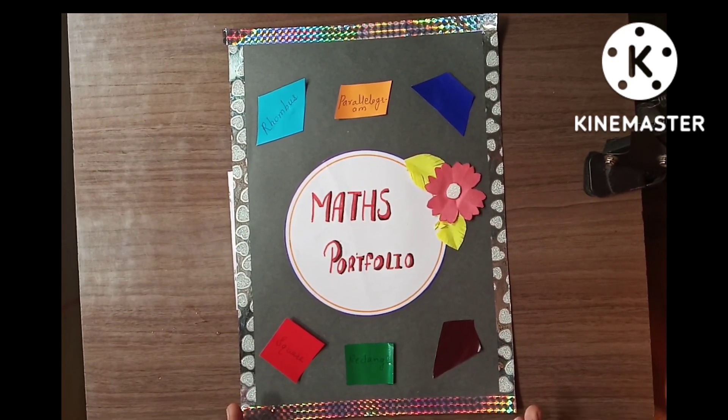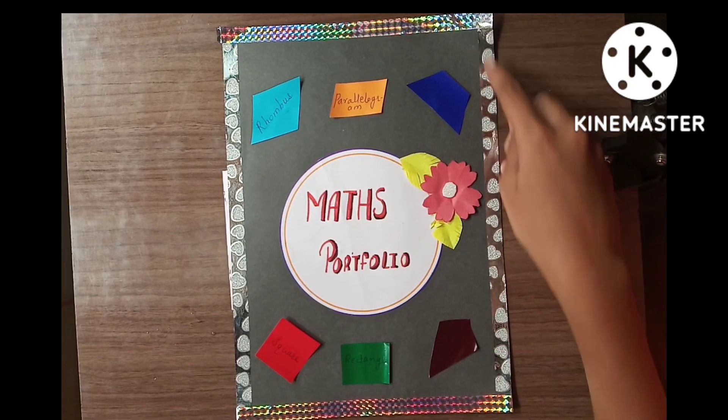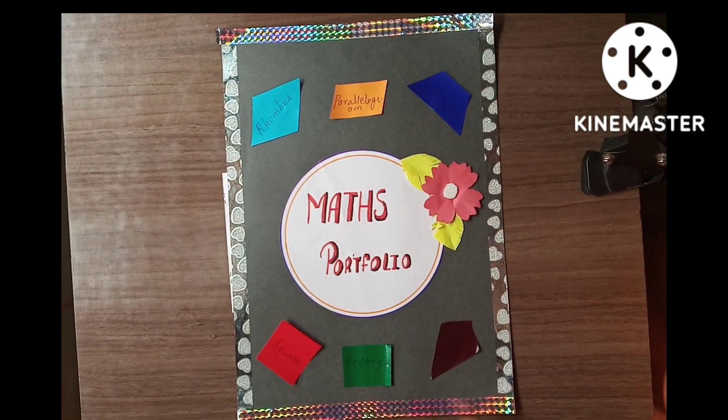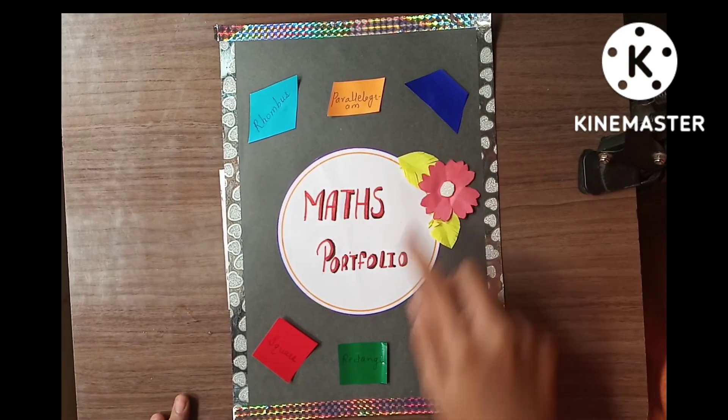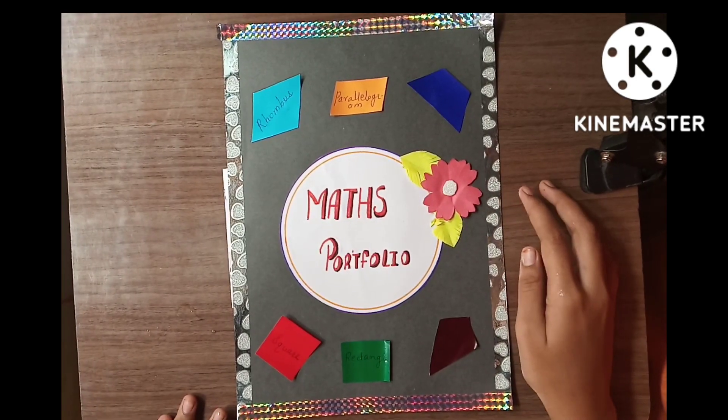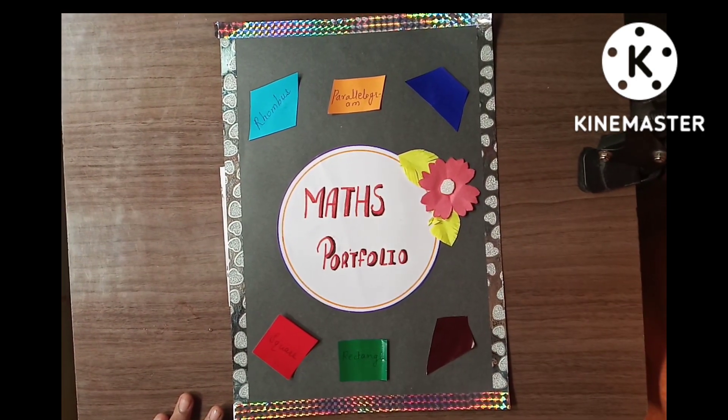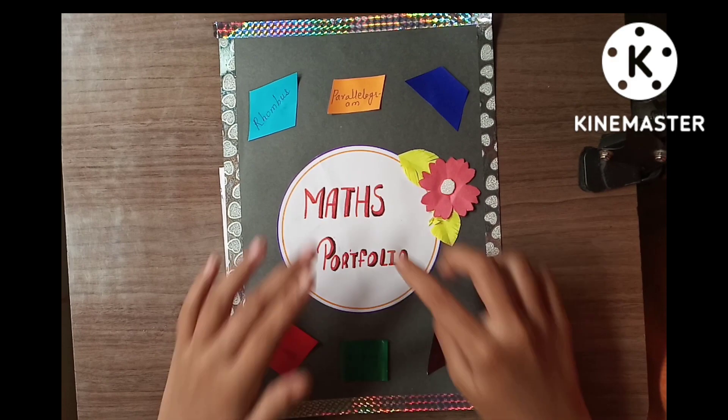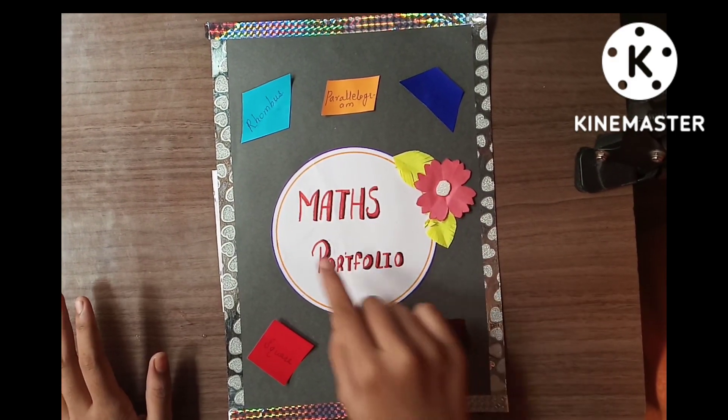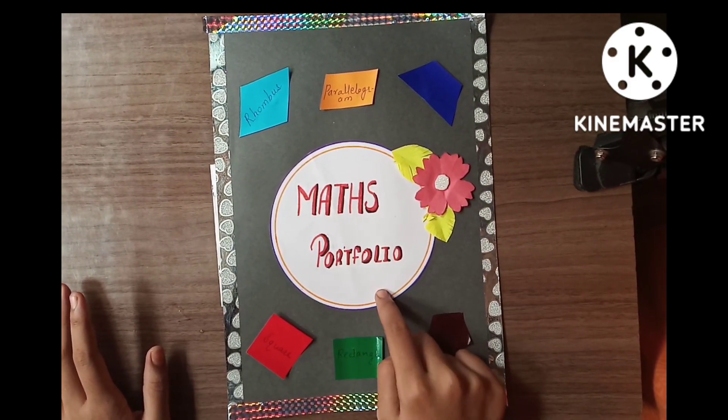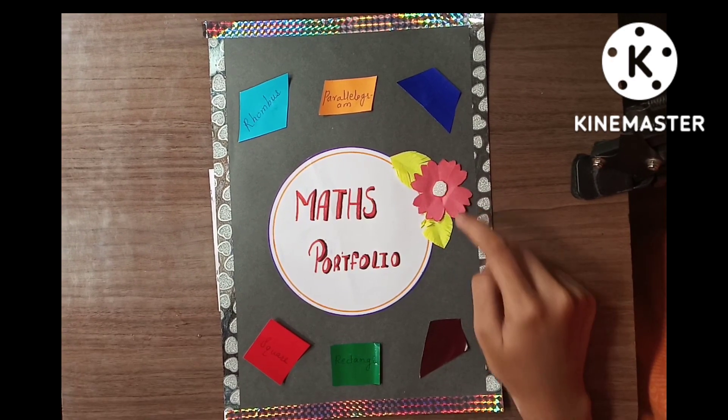I have made it with a black color paper. I have sticked the tape from a side and I have sticked here various shapes like rhombus, parallelogram, trapezium, square, rectangle and kite. I have cut a white paper and I have written here math's portfolio. Here I have stick a flower and some leaves.